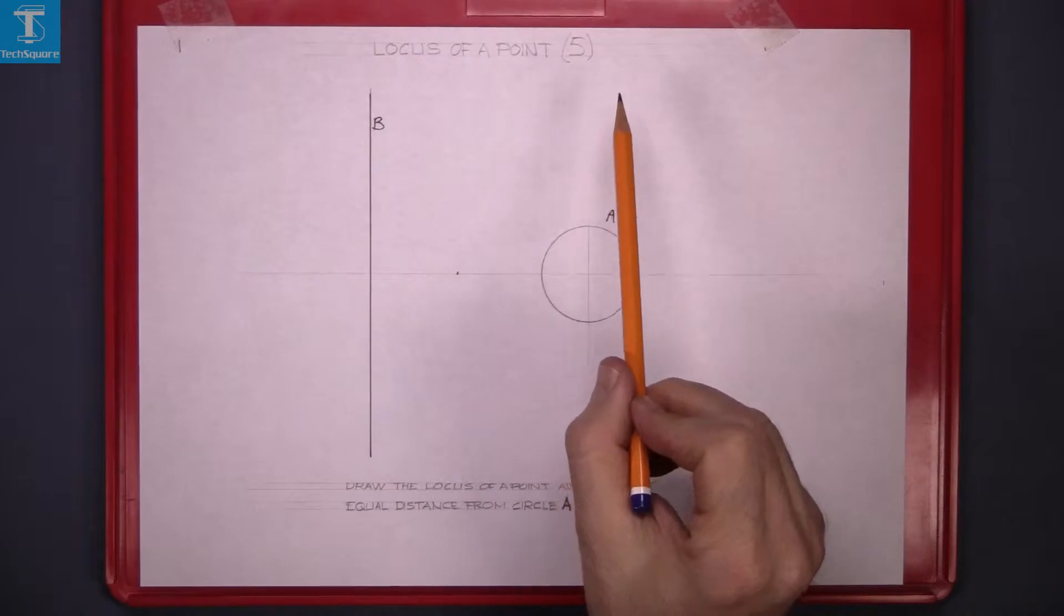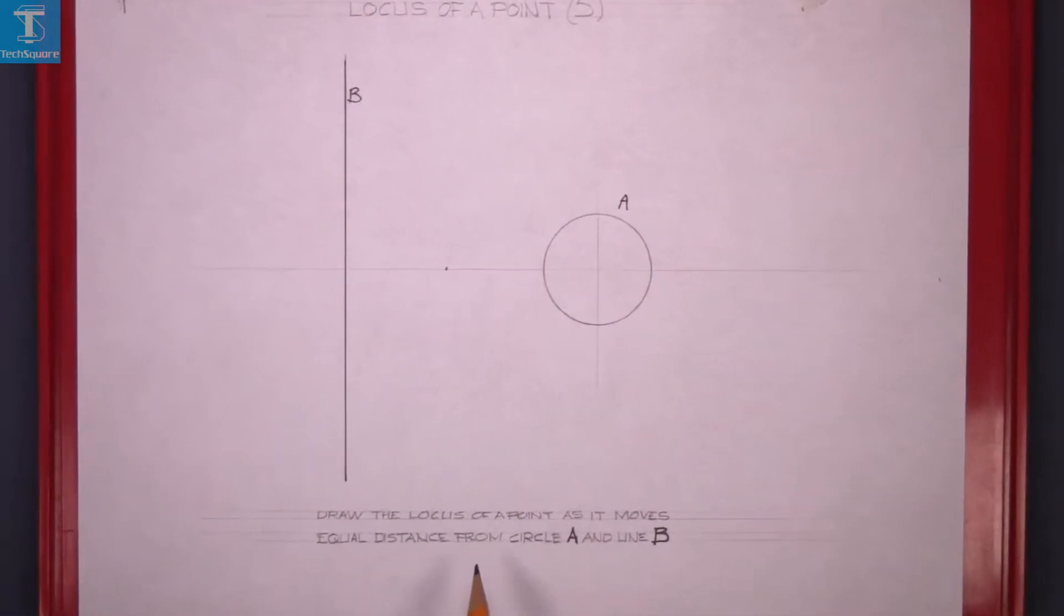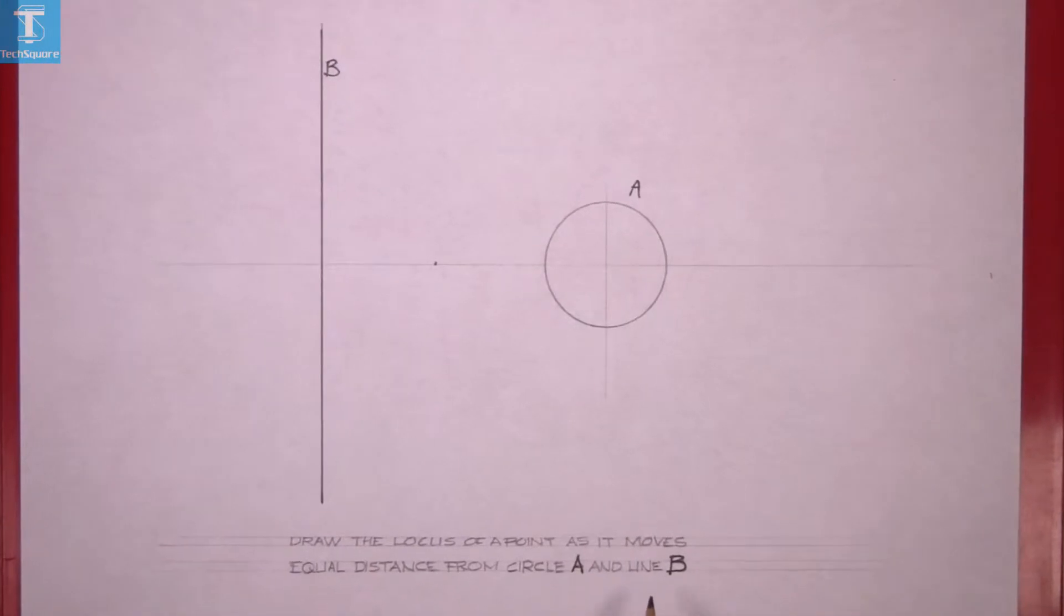Now this is locus of a point 5. Draw the locus of a point as it moves equal distance from circle A and line B. So we have circle A and line B and the line between the two.